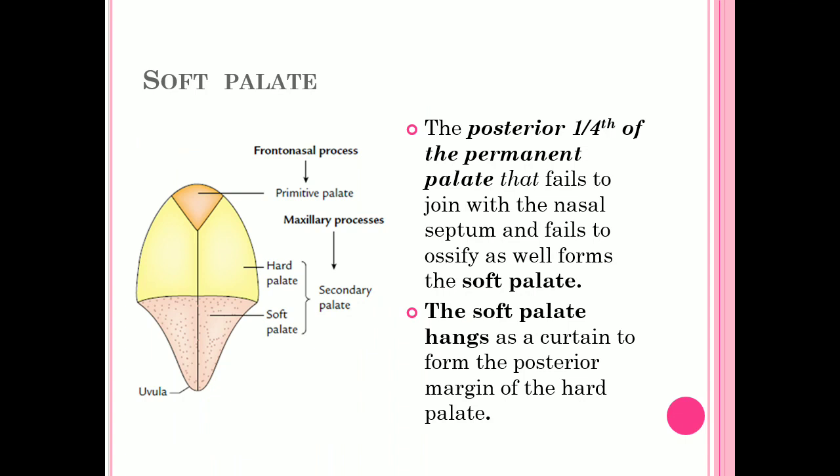The soft palate is the posterior 1/4 part of the permanent palate. This part fails to join with the nasal septum and fails to ossify, forming the soft palate. The posteriormost part forms the uvula. The soft palate hangs like a curtain and forms the posterior margin of the hard palate.